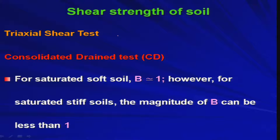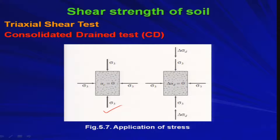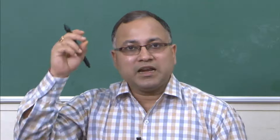However, for saturated stiff clay, the magnitude of B can be less than 1. There are basically two steps happening in this Consolidated Drained test. In the first step, you apply sigma_3 all-round — from the radial direction — by increasing the cell pressure. Due to that, there will be an enhancement in u_c, meaning excess pore water pressure builds up.